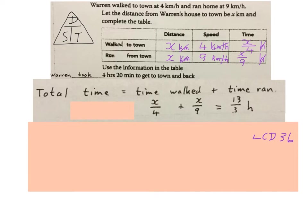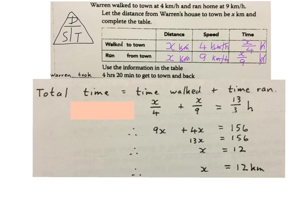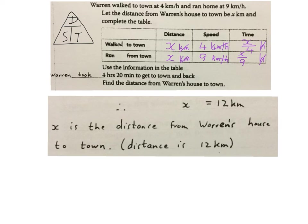I will multiply by the LCD, in this case 36, and solve this equation. After multiplying by the LCD and collecting like terms, I get 13x equals 156, and then x equals 12. Because x represents the distance, x is 12 kilometers. Remember what I said: in a word sum at the end you must give words back as your answer. We worked out that x was 12 kilometers, so that is the distance from Warren's house to town. Write in your final answer: the distance is 12 kilometers. You must give a word answer.